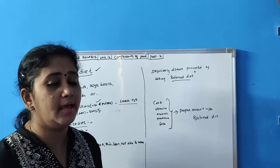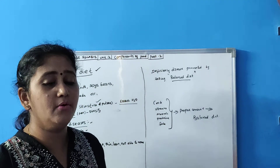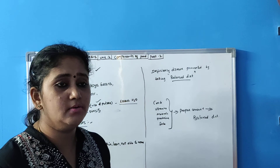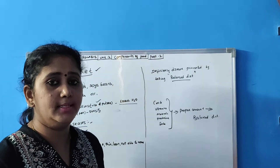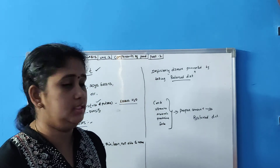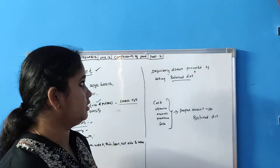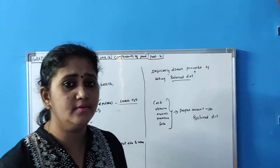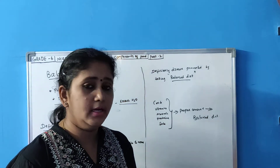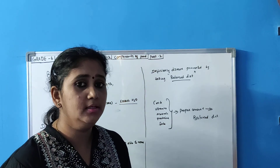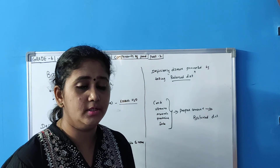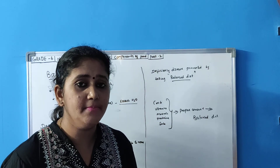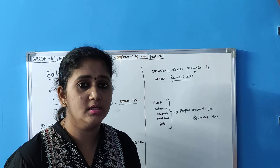Just like Bhujha, if you eat more quantities of fat — for example, cheese and milk — it will result in obesity. With this, we conclude the chapter Components of Food. Thank you friends, thanks for watching. If you like my channel, please subscribe, comment, and watch.